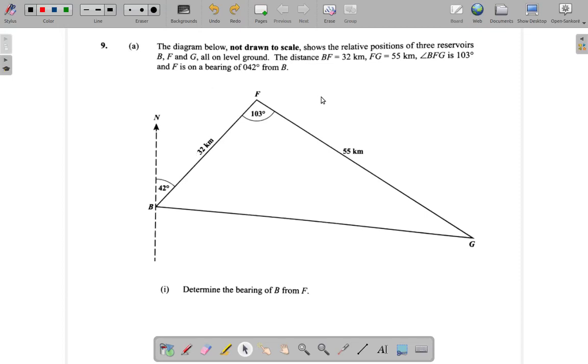Okay, question 9A1. It says the diagram below, not drawn to scale, shows the relative positions of three reservoirs. That means the positions compared with each other, relative to each other, of three reservoirs.